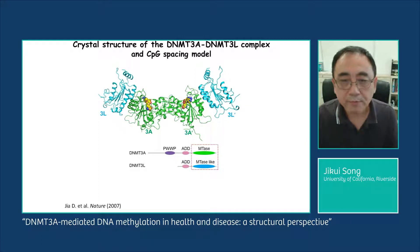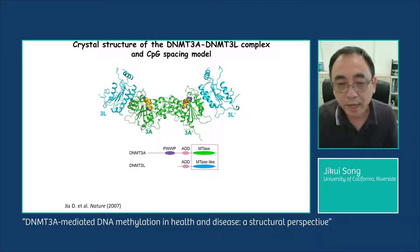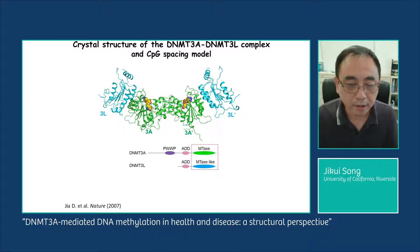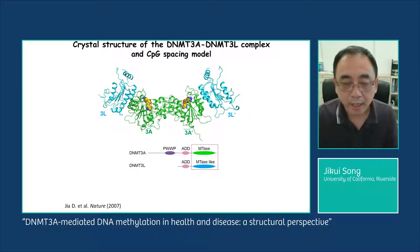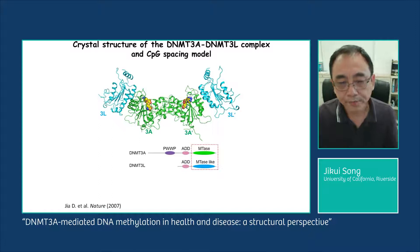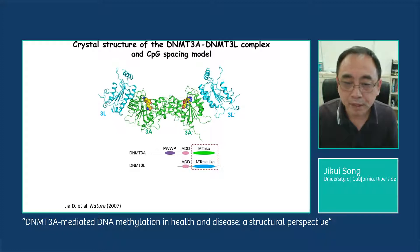The structure of the DNMT3A methyltransferase domain in complex with the C-terminal domain of DNMT3L was reported by Xiao Dongsheng's group in 2007. This complex forms a tetrameric architecture, mediated by homodimerization of DNMT3A, and then each DNMT3A monomer further associates with a DNMT3L monomer.